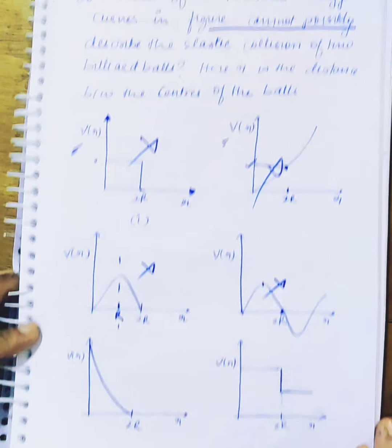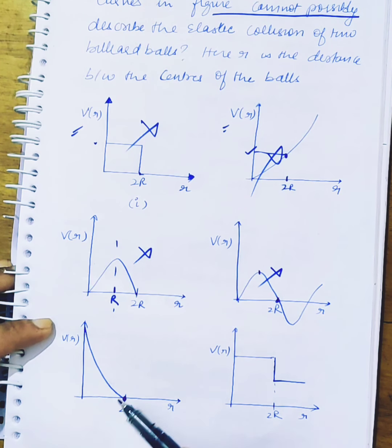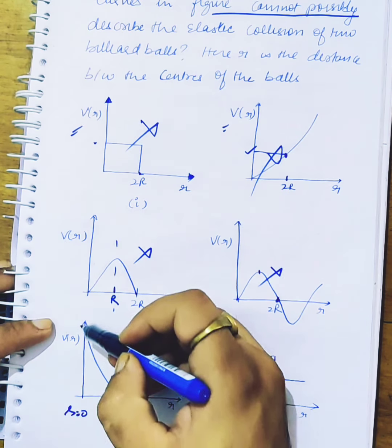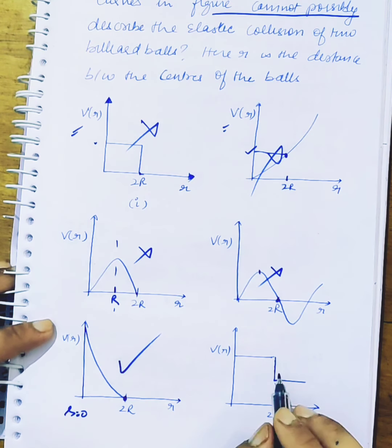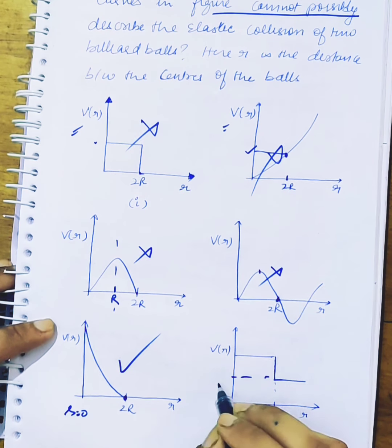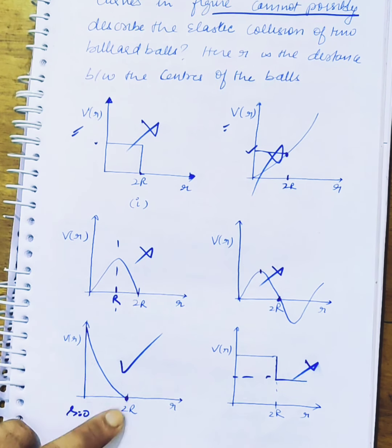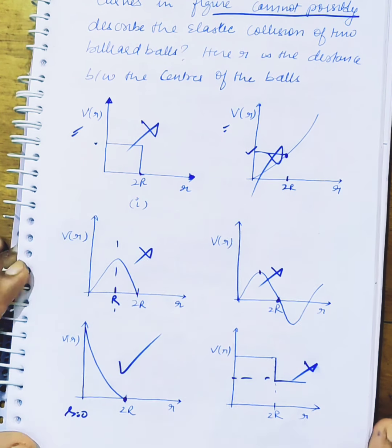Now, let's talk about this curve. Look at this, at 2R it is zero. This is correct. It just increases. So this is right. But this one also has the problem that 2R does not have zero potential energy. So if we have 5 curves, the ones where 2R does not have zero potential energy are wrong. That is the end of this question.